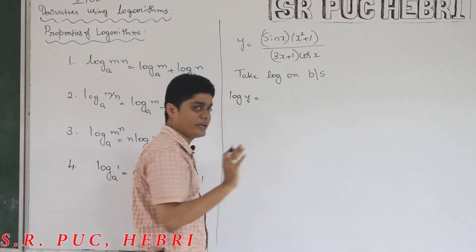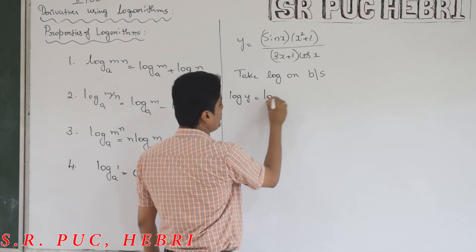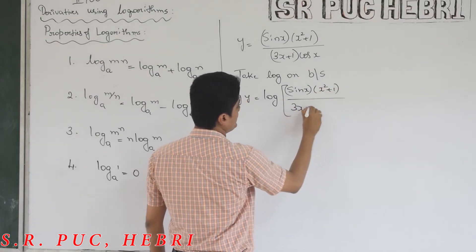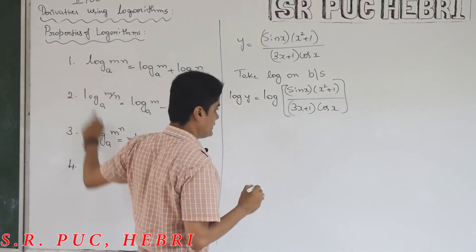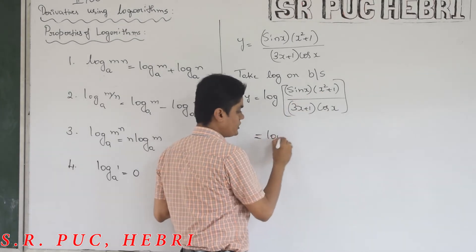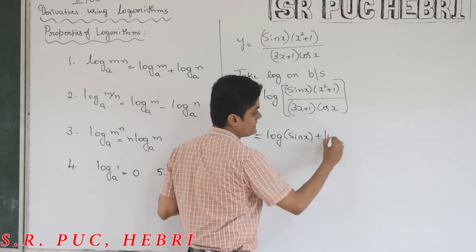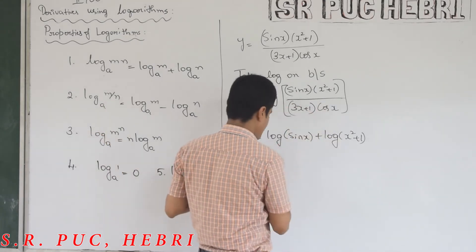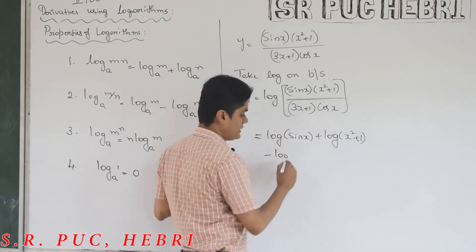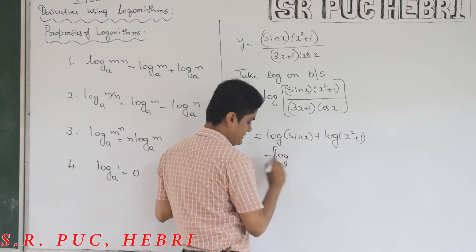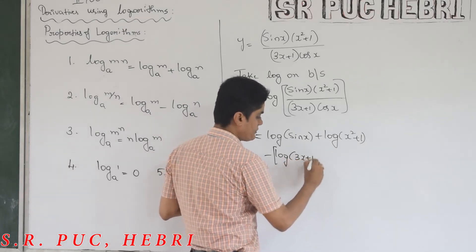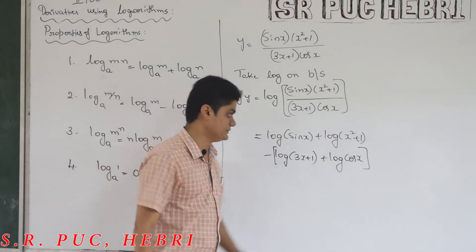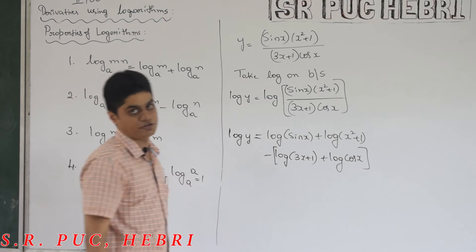Now use these properties one by one. This is a product, so according to the first property it converts into addition. Then division converts into difference — there will be a minus sign, so put a bracket to avoid losing it. Again inside you get a product, which converts into addition. So now this expression is ready to differentiate.